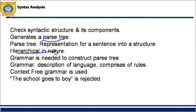Grammar is needed to construct this parse tree. I can't just take a sentence and divide it into a tree arbitrarily — I have to use a certain system, which is nothing but grammar. Chomsky's hierarchy has given us a number of types of grammar, among which CFG is used for generation of the parse tree. You should know context-free grammar. Grammar is nothing but the way you describe a language using rules.